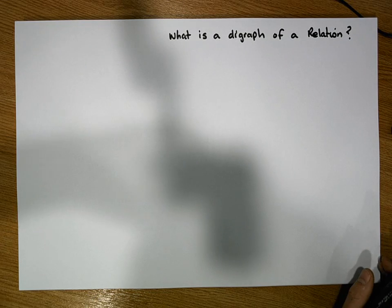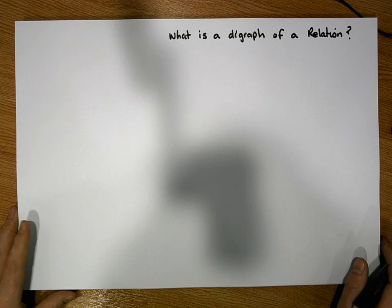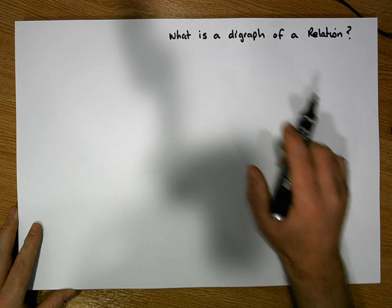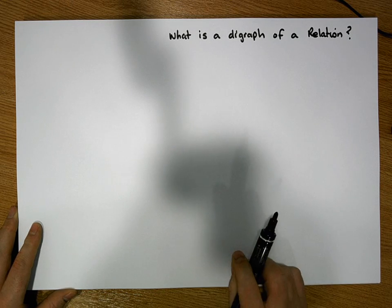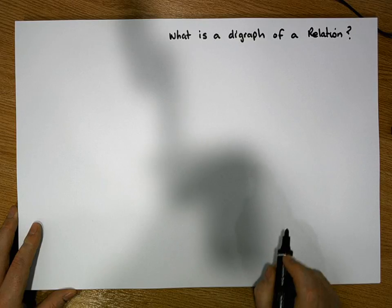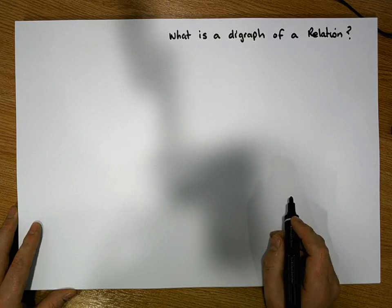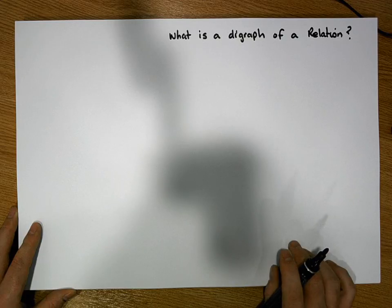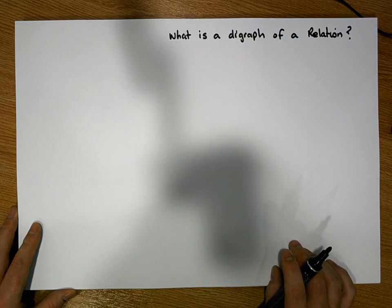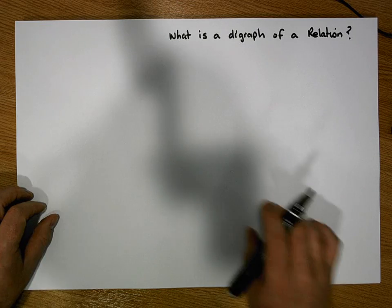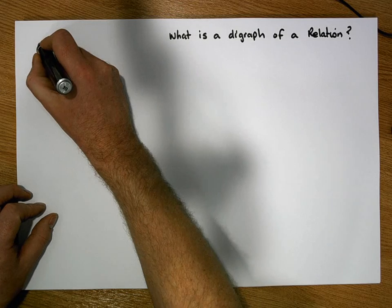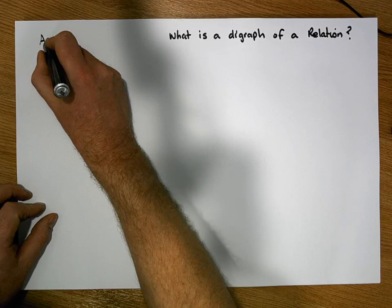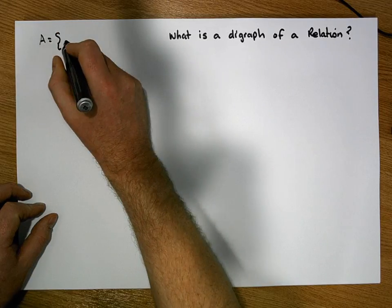Like all of our videos up to this particular stage, to draw a digraph of a relation we need to have a relation in the first place. Like in our previous videos, we defined a relation on a particular set and said that a relation is simply a subset of a Cartesian product.